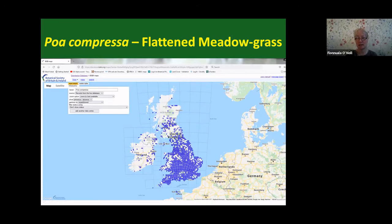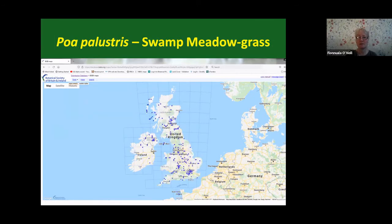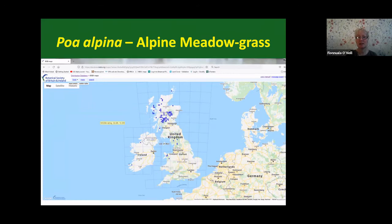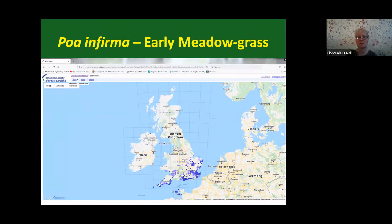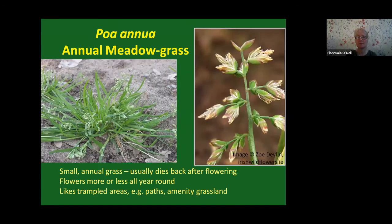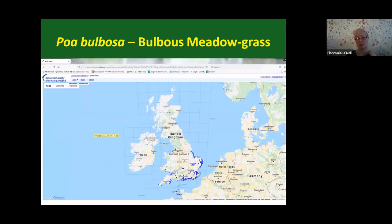After those four main species, occurrence drops off considerably. Poa compressa is much more common in Britain. Poa palustris, Poa chaixii, and Poa alpina are mostly found in the highlands of Scotland. Poa infirma is a more southern Britain species. Poa bulbosa and a couple of others also occur, but I've listed only those found in both Britain and Ireland. Some are very rare in Ireland, so I'm going through just the first four or five species.